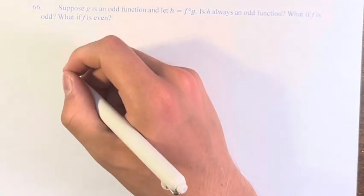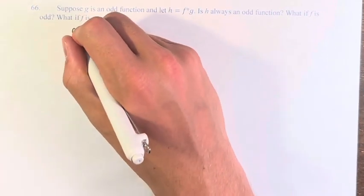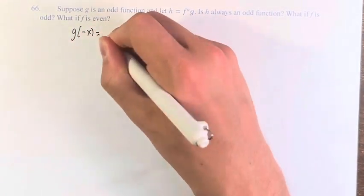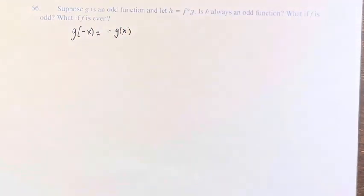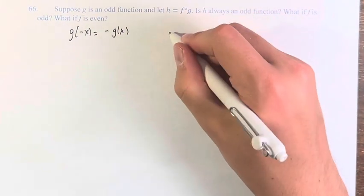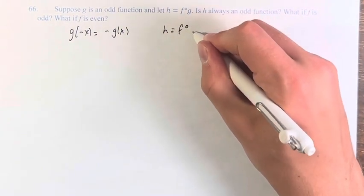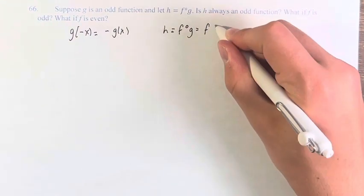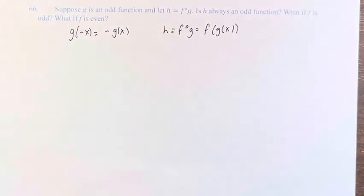So if g is an odd function that means that g of negative x is equal to negative g of x. We're also told that h is equal to f of g, which we can write as f of g of x, since it's a little bit clearer.